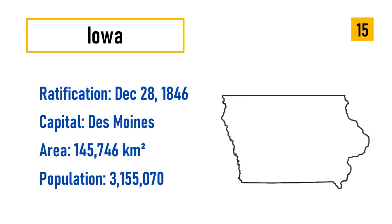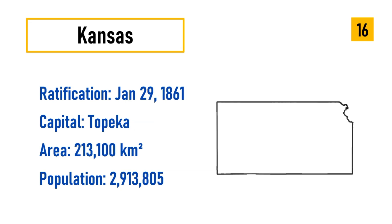Number 15: Iowa, ratification December 28, 1846, capital Des Moines, area 145,746 square kilometers, population 3,155,070. Number 16: Kansas, ratification January 29, 1861, capital Topeka, area 213,100 square kilometers, population 2,913,805.